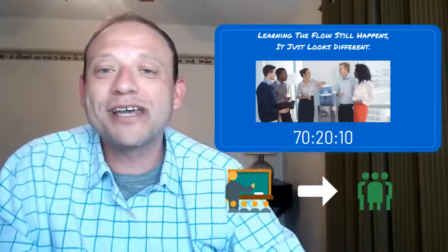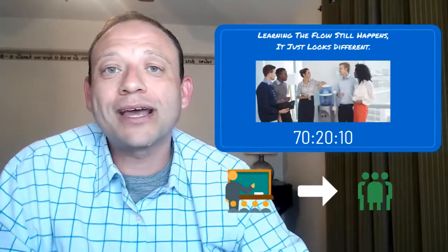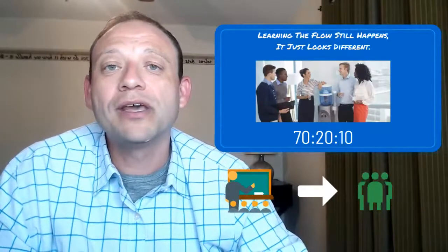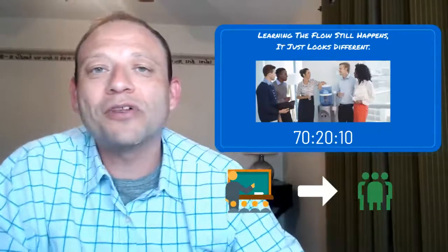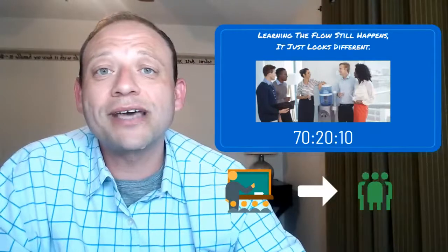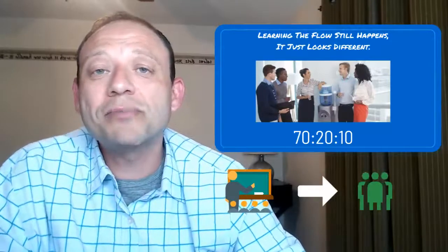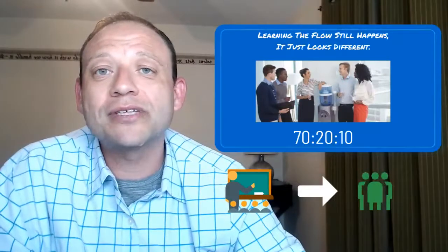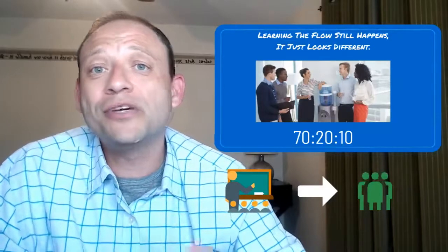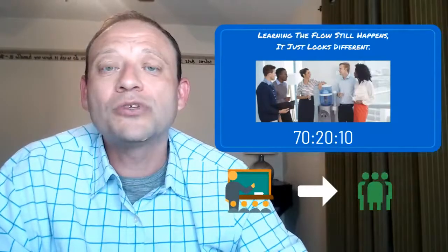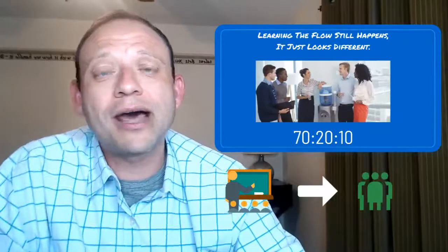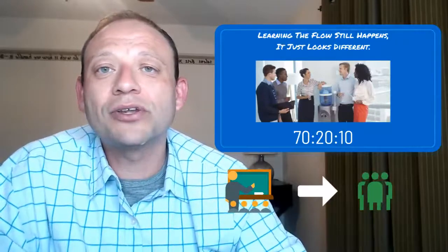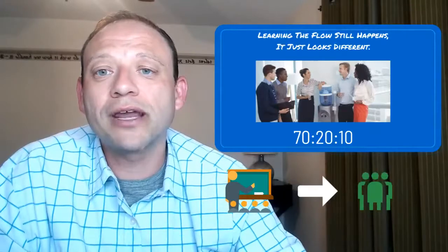So now this water cooler conversation might look more like a Slack or a morning Zoom meeting. One popular methodology to explain what learning in the flow of work looks like is the 70-20-10 model, which states 70% of what we learn as adults at work is done by doing, by experiencing. 20% of what we learn is through learning from our peers or collaborating, and 10% is learning in formal classroom training.